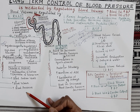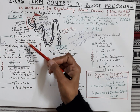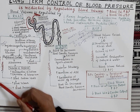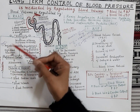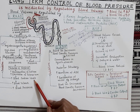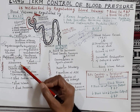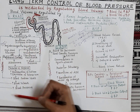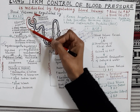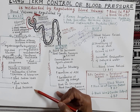Once blood pressure normalizes, the negative feedback signal goes to the kidneys, and the kidneys suppress the production of renin. As blood volume increases, it also provides a negative feedback signal to the kidneys suppressing renin production. And as blood sodium level rises, it inhibits the adrenal cortex, which suppresses the production of aldosterone. This is how the renin-angiotensin-aldosterone system works to bring blood pressure back to normal.